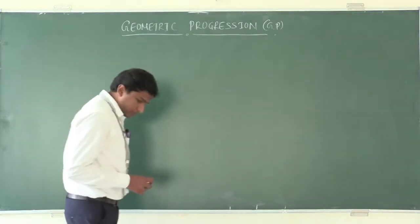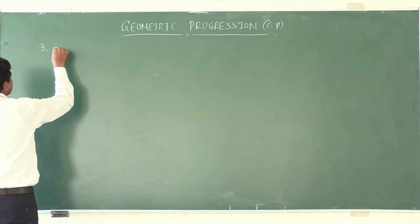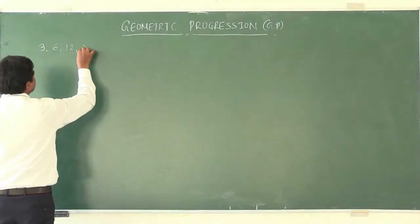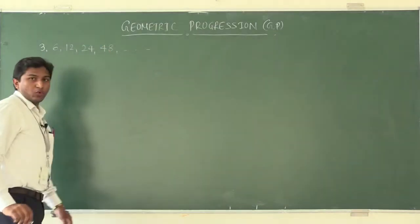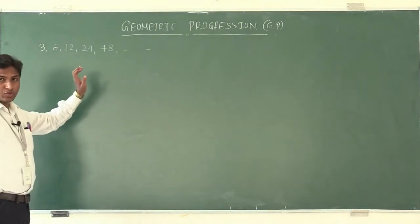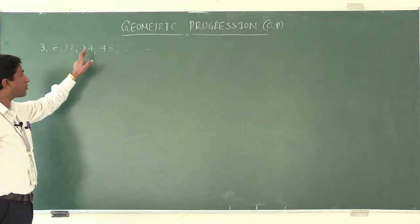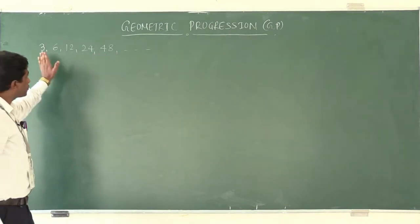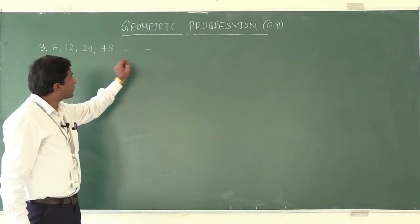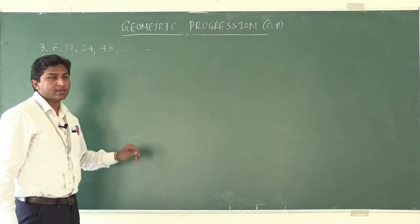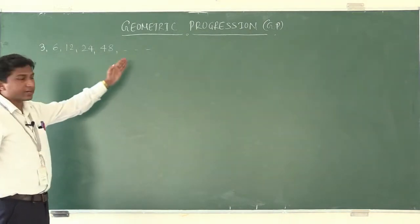For example, take the sequence 3, 6, 12, 24, 48, and so on. This is an infinite sequence of numbers because after 48 I have written three dots indicating that this sequence never ends — it goes on.